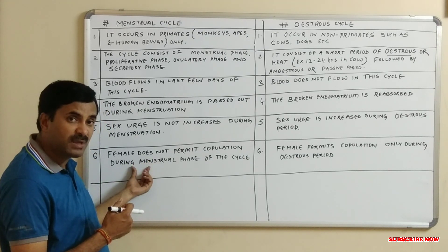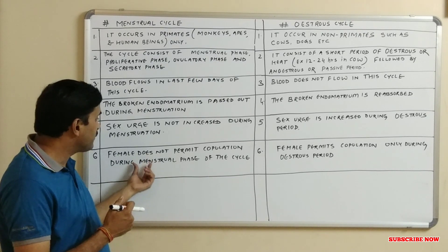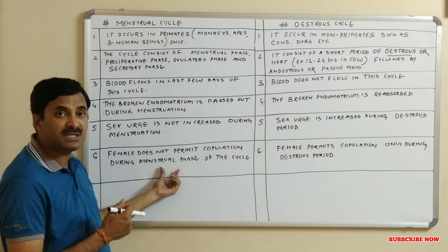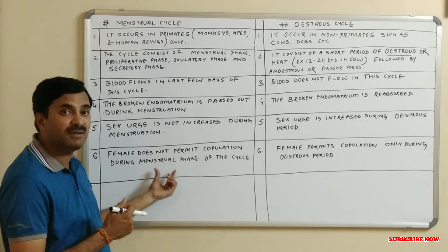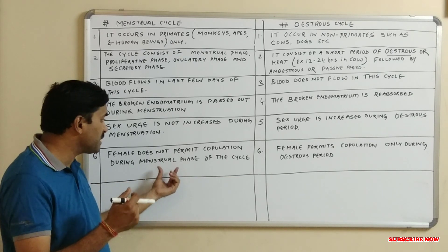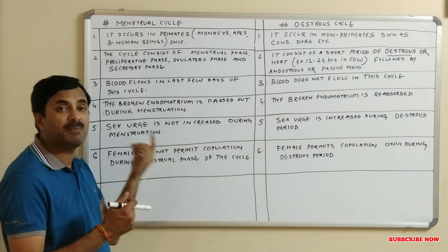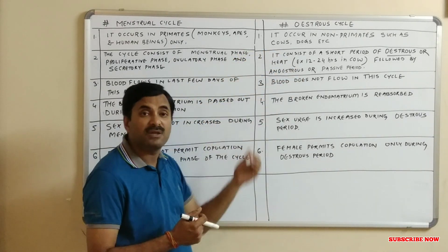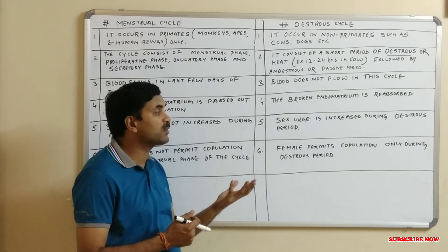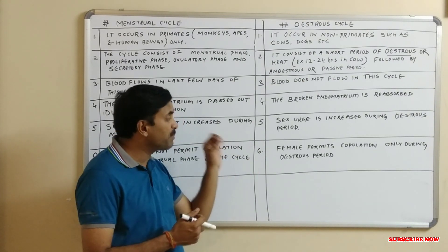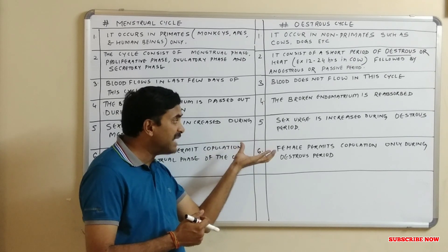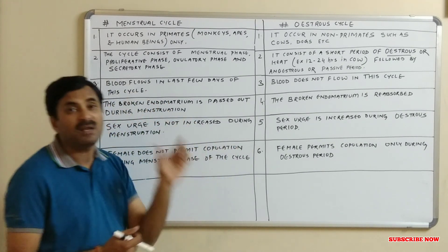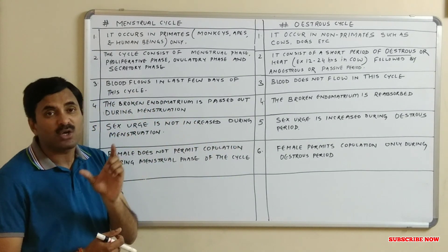The sixth and last difference is that in the menstrual cycle, the female does not permit copulation during the menstrual phase — the three to five days of bleeding. In the estrous cycle, the female permits the male for copulation specifically during the estrous or heat period, actively attracting the male for the purpose of reproduction.